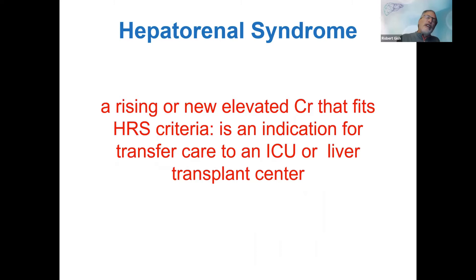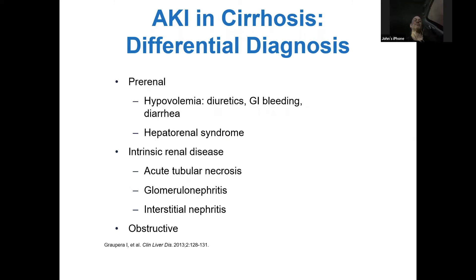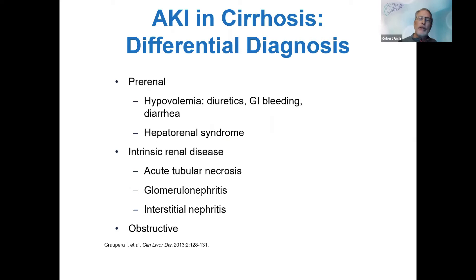Hepatorenal syndrome has been an evolving term. If you've got a creatinine that's increasing by more than 0.2 to 0.3 in a liver failure patient, hepatorenal syndrome needs to be in your differential diagnosis — an indication for transfer to an ICU, and an indication to call a liver transplant center. We now call this AKI in cirrhosis. You're going to start with your first chart statement: this is acute kidney injury in a cirrhotic patient, and then run through the differential. Volume resuscitate with electrolytes and albumin, stop diuretics, manage GI bleeding, stop or treat diarrhea.